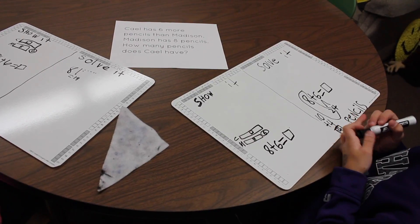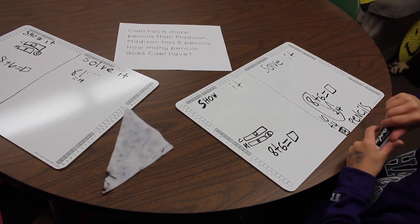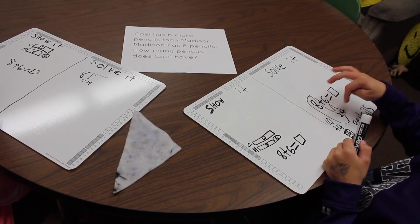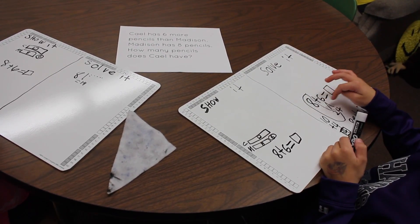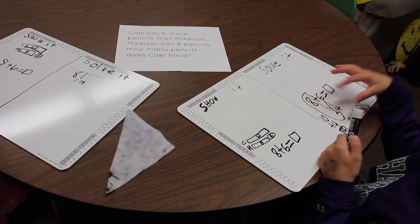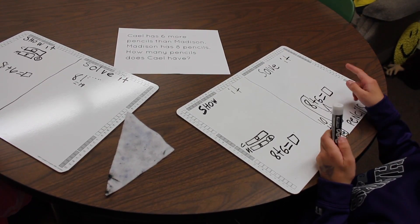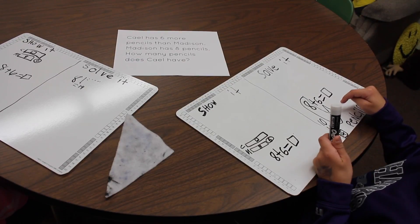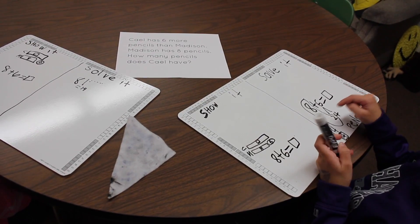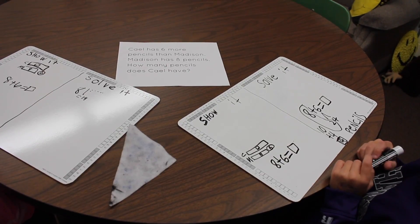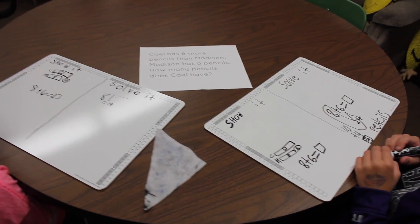Cal, what strategy did you use to solve? I used, just take away two from the six and then give two to the eight. That equals ten. So then the six minus the four, then we have four. So then it's more easy. Ten plus four equals fourteen. Okay, so you use the make a ten strategy. All right. Thanks, guys.